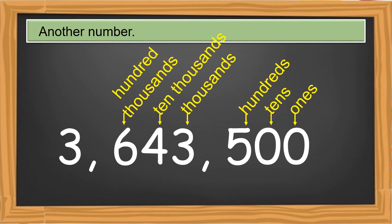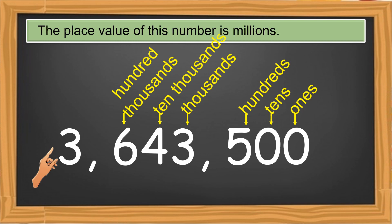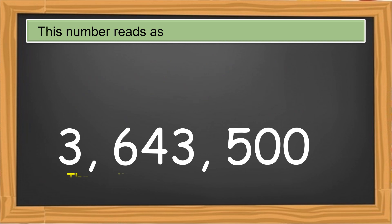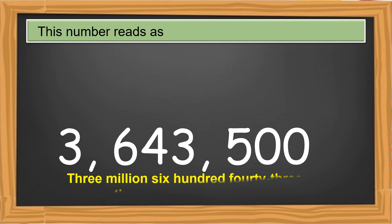Another number. There's an added place value from the previous example. The place value of this number is millions. This number reads as 3,643,500.